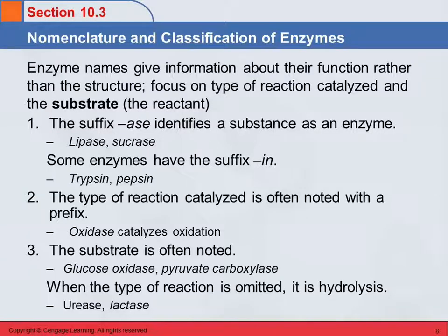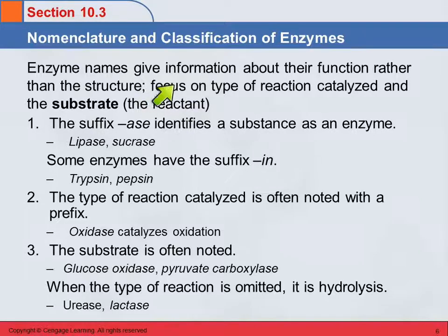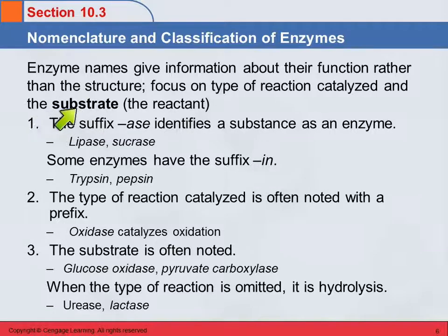We'll talk briefly about the nomenclature of enzymes, which is very different from the nomenclature we've learned for organic chemicals. Enzyme names give us information about their function, not about their structure. That's very different from how we name organic chemicals like carboxylic acids and amines. The names focus on the type of reaction that is catalyzed and also on the substrate — the reactant that the enzyme acts on.